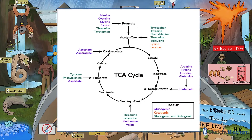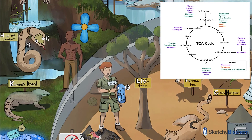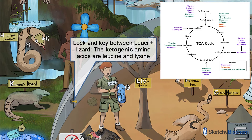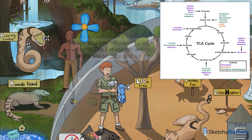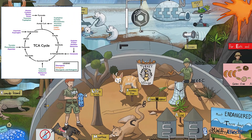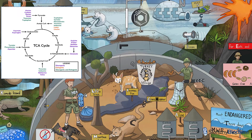Before we conclude this sketch, you should know which amino acids are glucogenic, ketogenic, or both. Glucogenic amino acids can be metabolized to glucose during gluconeogenesis. In contrast, ketogenic amino acids are degraded to acetyl-CoA. We drew a lock and key between Lucy and the lizard to help you remember that lysine and leucine are ketogenic amino acids and only ketogenic amino acids — don't be trying to convert them to glucose, it won't work. Threonine, tyrosine, tryptophan, phenylalanine, and isoleucine are both glucogenic and ketogenic.